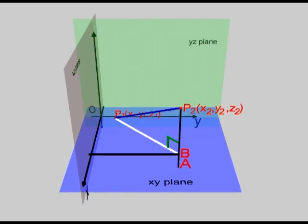From B draw a line perpendicular to the xz plane. It intersects the plane at point C. From P1 draw a line perpendicular to line BC. The two lines intersect at point D. From point P1 draw a line perpendicular to the xz plane. It meets the plane in point E.